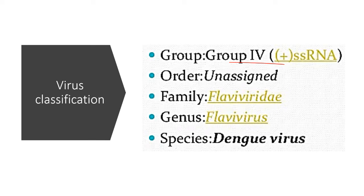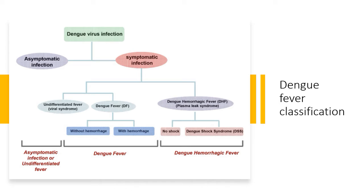What are the classification? It's a group four as per the Baltimore classification. If you want to know, you can watch that Baltimore classification video of mine. This is single-stranded plus-strand RNA virus, order unassigned, family Flaviviridae, genus Flavivirus, species dengue virus. There are different ways people pronounce it - dengue, dengue - but I think it's mostly dengue that you should pronounce it.